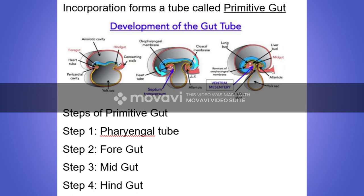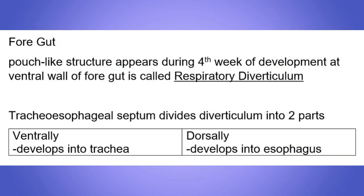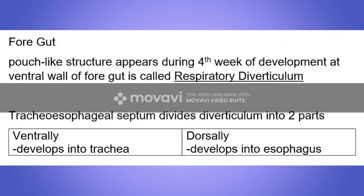Some important points about the primitive gut: the lining of the primitive gut is derived from the endoderm, while the stroma, muscle, and connective tissues are derived from the mesoderm. The foregut is developed when the respiratory diverticulum forms.